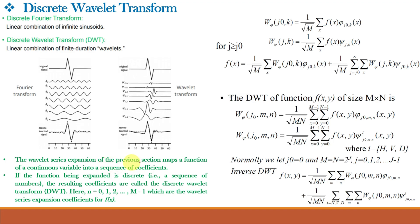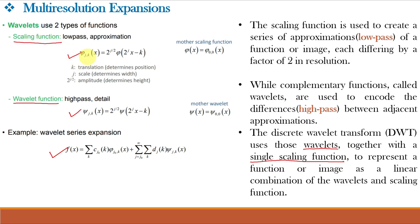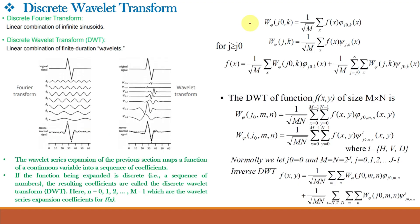The Wavelet Series Expansion maps a function of a continuous variable into a sequence of coefficients. In the previous video class we understood Multi-Resolution Expansions, where the scaling function is given by Phi and the Wavelet function is given by Psi. The Discrete Wavelet Transform uses a number of these Wavelet functions together with a single scaling function to represent a function or an image. The scaling function is a low-pass filter used for approximation, and the Wavelet function is used for details. The 1D DWT is given by corresponding equations where n = 0 to M-1 are the Wavelet Series Expansion coefficients for signal f(x).